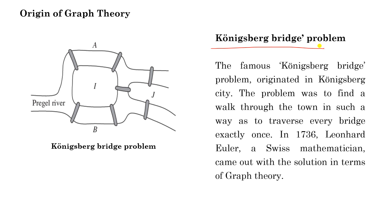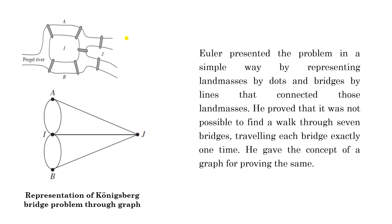The origin of graph theory was the Königsberg Bridge Problem. Königsberg was a Prussian city, now in Russia. In this city, the Pregel River split in such a way that two islands I and J were formed, and A and B were the two river banks. The problem was to find a walk through the town traversing each bridge exactly once. In 1736, Leonhard Euler, a Swiss mathematician, came out with the solution in terms of graph theory — he first converted this problem into graph theory, then discussed the solution.